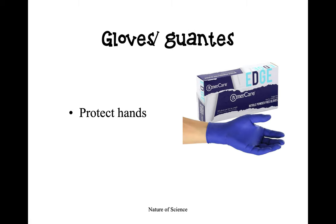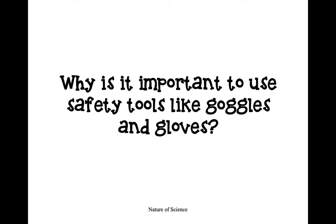Gloves, like goggles, are also protective for our hands. They form a barrier to keep any harmful chemicals or substances off of our hands and on the gloves — they keep the bad stuff out and the good stuff in. Now that you know these two tools, why might it be important to use safety tools like goggles and gloves?